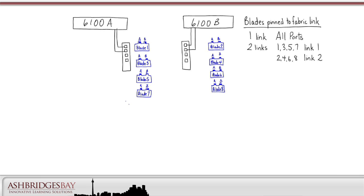Three links is not a valid configuration. If we have four links, then blades 1 and 5 are pinned to link 1, blades 2 and 6 are pinned to link 2, blades 3 and 7 to link 3, and blades 4 and 8 are pinned to link 4.